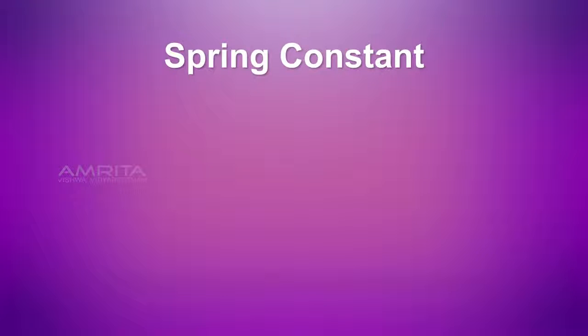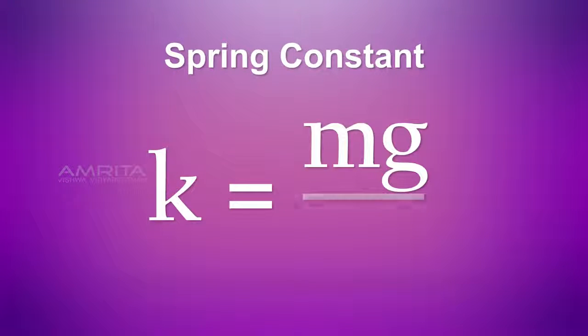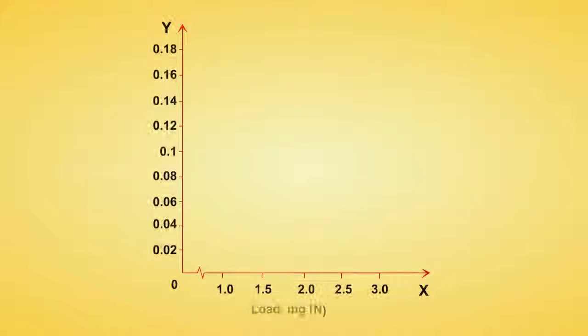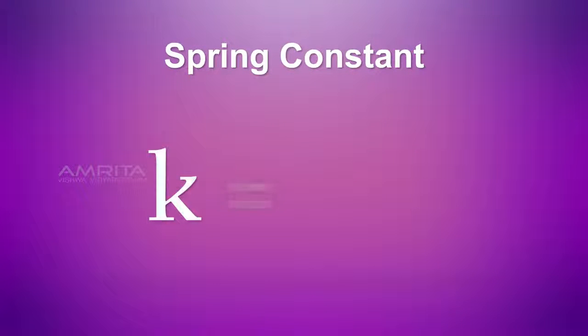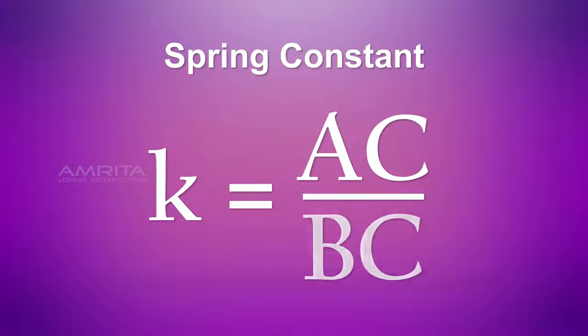The spring constant is calculated using the formula. A straight line graph is obtained. From the reciprocal of the slope of the graph, the spring constant k is calculated, that is, k equals AC by BC.